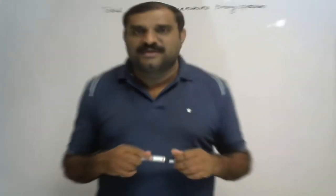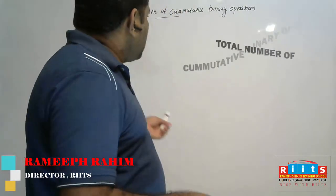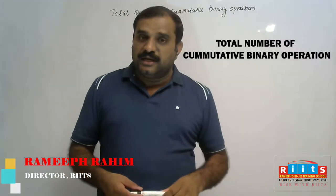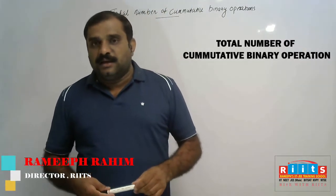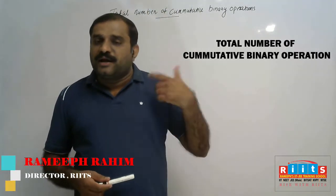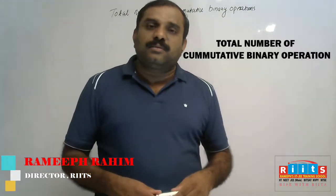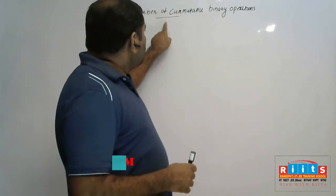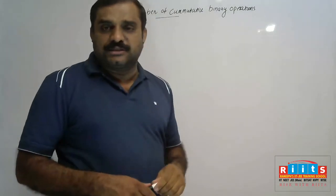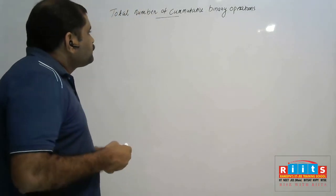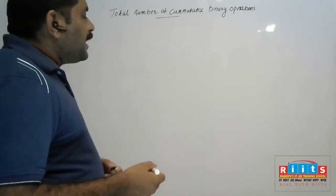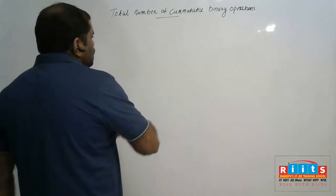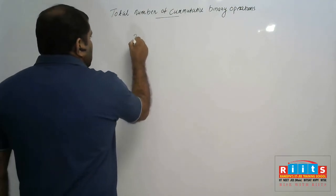Hi students, today we discuss the total number of commutative binary operations defined on a set. In a previous episode we already discussed the total number of binary operations. Now listen to this topic: what do you mean by commutative binary operation?